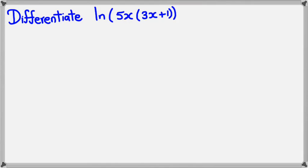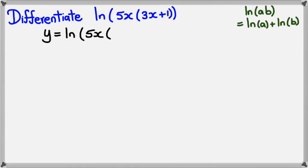Okay, this time I want to look at differentiating ln of 5x times 3x plus 1. So, once again, log property, where if you have ln of ab, this is equal to ln of a plus ln of b. So I know that I could rewrite this function as two separate ones. In other words, y would equal ln of 5x plus ln of 3x plus 1.